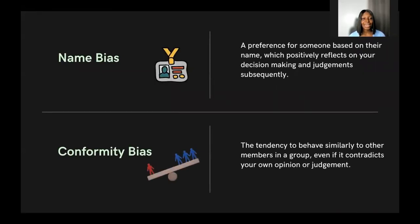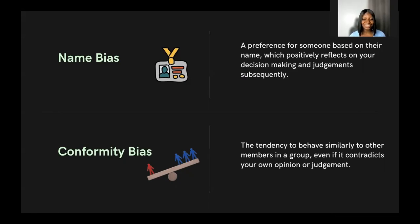Name bias occurs when we place our judgments based on how a name sounds. This often happens when reviewing applications — without meeting people one-on-one, we favor those with familiar English-sounding names over those with non-English names. These are common mistakes we make in our communities.